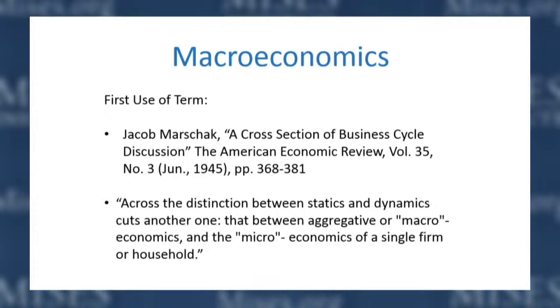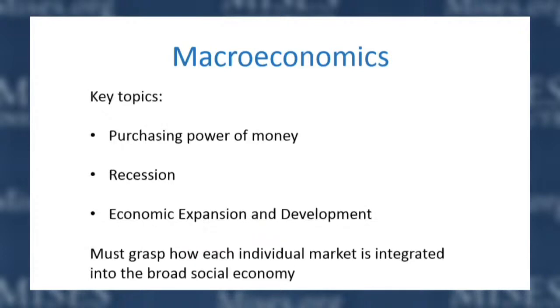There are sort of two types of economics: microeconomics and macroeconomics. In macroeconomics we can identify certain topics economists are interested in. One is the purchasing power of money — price inflation and deflation, the purchasing power of money being the inverse of the level of overall prices. Another topic is recession, or business cycles. Third is the opposite of recession: what causes economic expansion and development. Those are the three main topics discussed in macroeconomics, and any good macroeconomic framework should be able to speak truth to these topics.